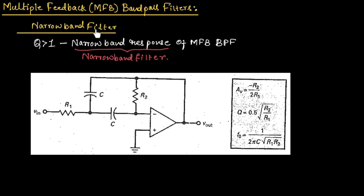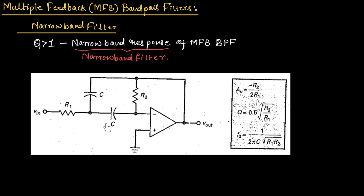Now let us understand the narrow band filter. If the quality factor is greater than 1, there will be a narrow band response. The filters that produce narrow band response are known as narrow band filters. For a narrow band filter, we can use a multiple feedback filter as shown in this figure. The input is applied to the inverting terminal of an op amp and it has two feedback paths — one from the capacitor and another from the resistor. For the band of frequencies between the low frequency and high frequency, this circuit will act as an inverting amplifier. For other frequencies, the output is zero.